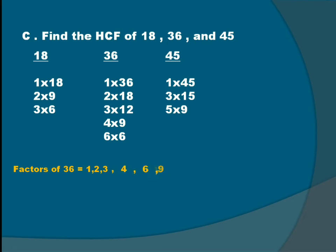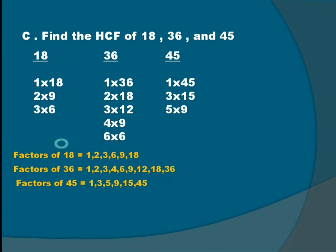Factors of 36: 1, 2, 3, 4, 6, 9, 12, 18, 36. Factors of 18: 1, 2, 3, 6, 9, and 18. Factors of 45: 1, 3, 5, 9, 15, and 45.